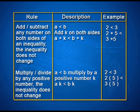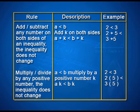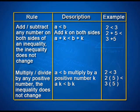Rule 2: If we multiply or divide by any positive number, the inequality does not change. That is, if a < b and we multiply by a positive number k, then a×k < b×k. For example, 2 < 3 implies 2×5 < 3×5.